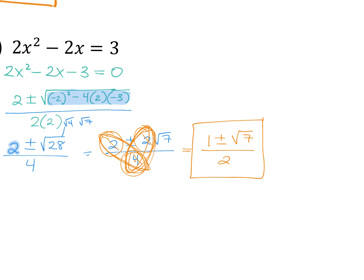We divided two over four to get one over two, and two over four to get one over two. There's essentially a one out in front. How many answers is that? Two — because it's one plus the square root of seven and one minus the square root of seven. Those are your two answers.